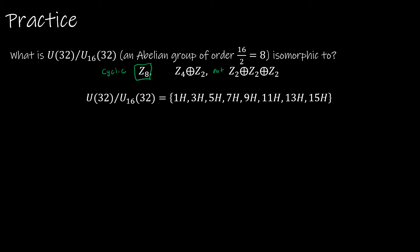We should also note that any element in Z2×Z2×Z2 is going to be of order 2. Any element looks like some combination of 0s and 1s under addition. Adding such an element to itself gives 2 times each component, but mod 2 that's (0,0,0), the identity. So every element has order 2.